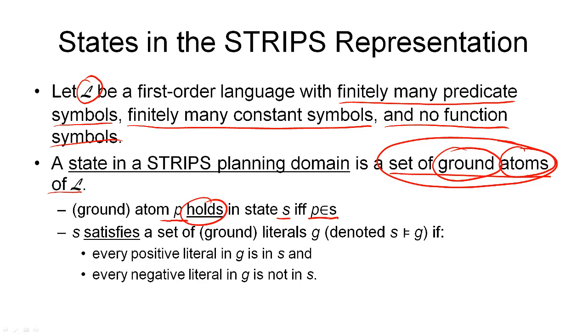So, a state is a set of ground atoms, and if P is an element of that set, then we say that P holds in that state. And vice versa, if P is not an element of that set, we say that P does not hold in that state. We call that the closed world assumption. And this is quite an important assumption made by the STRIPS representation, as we define it here.